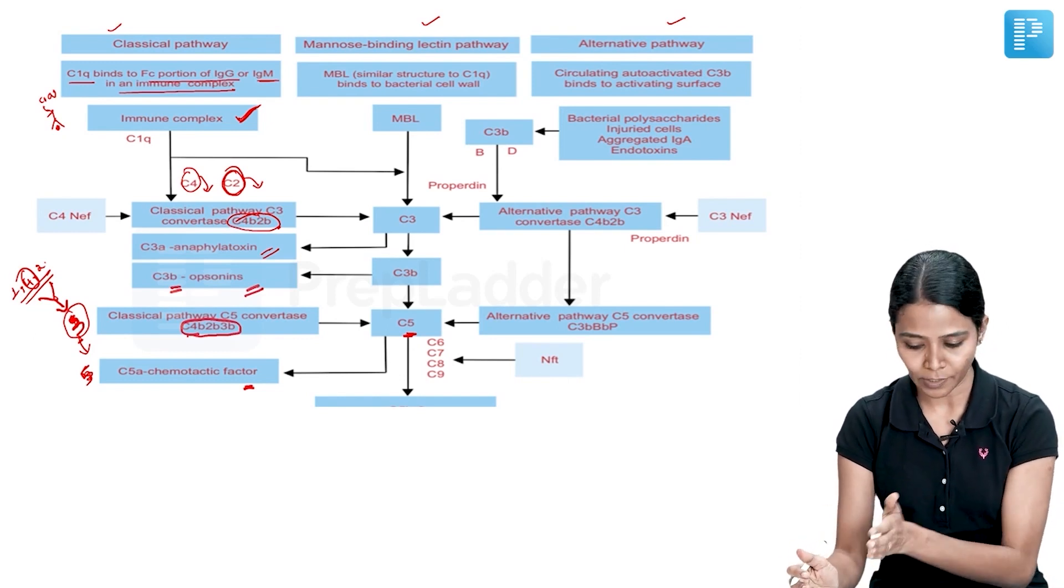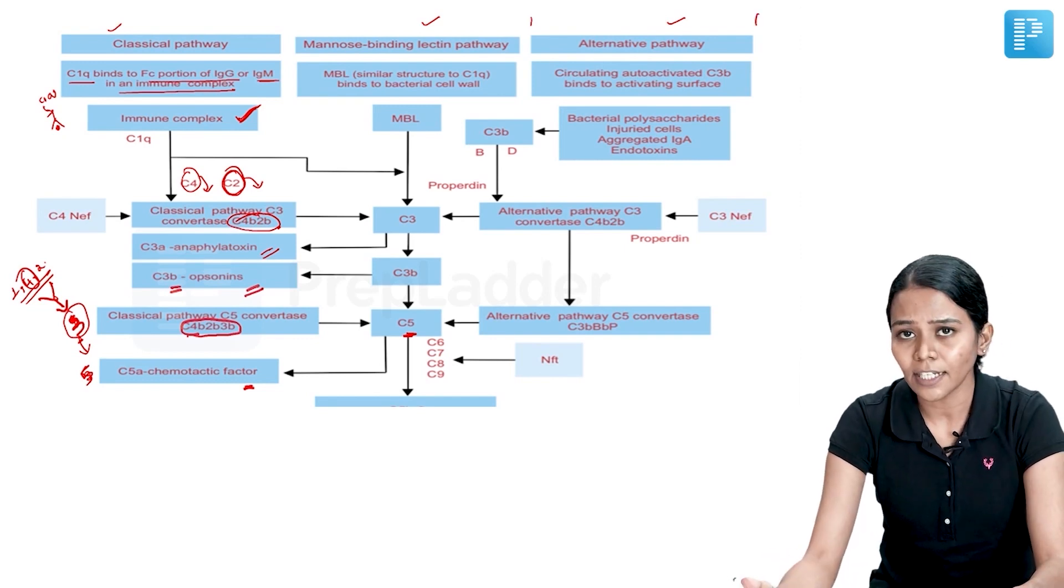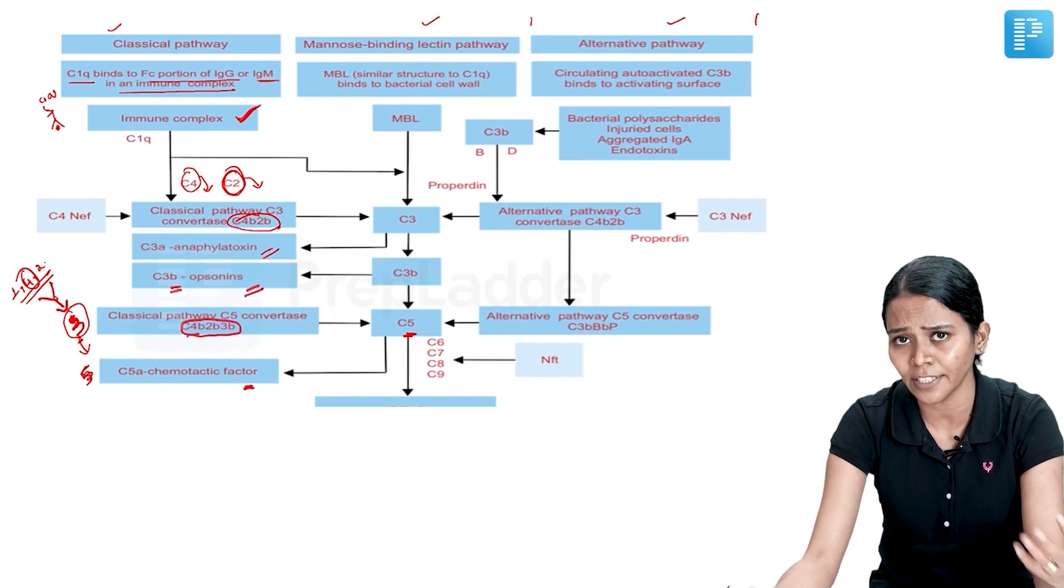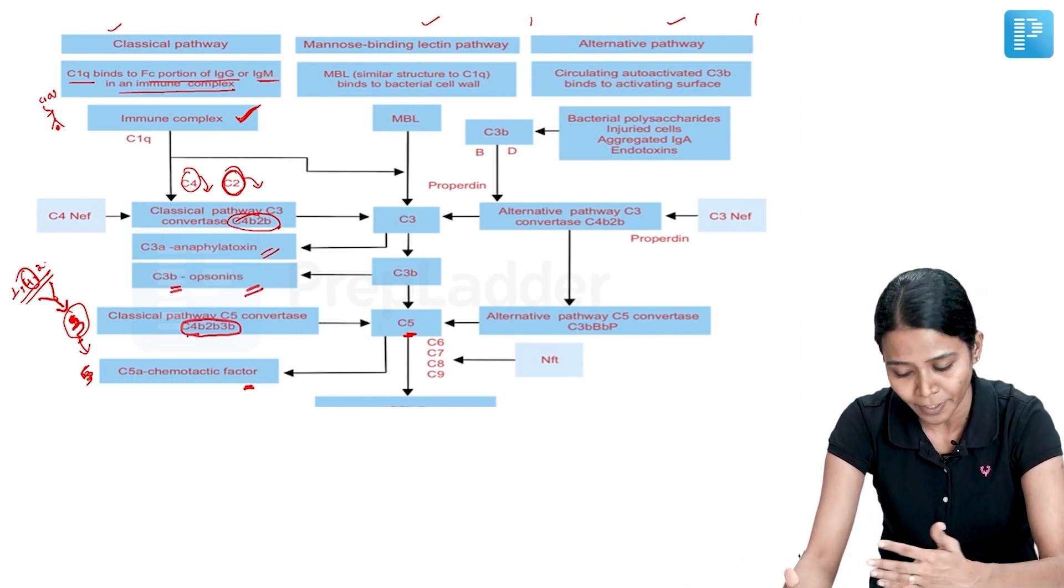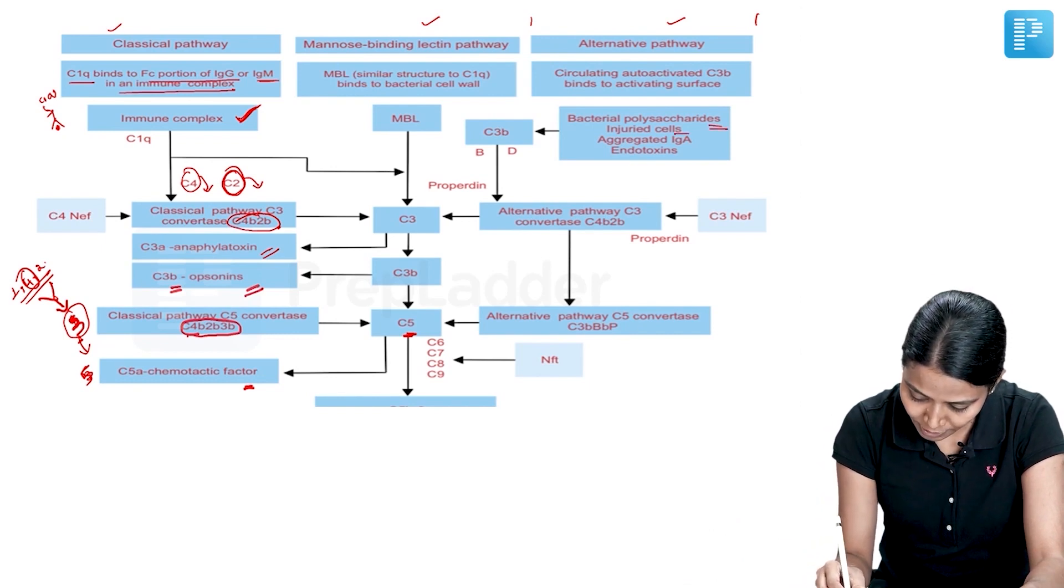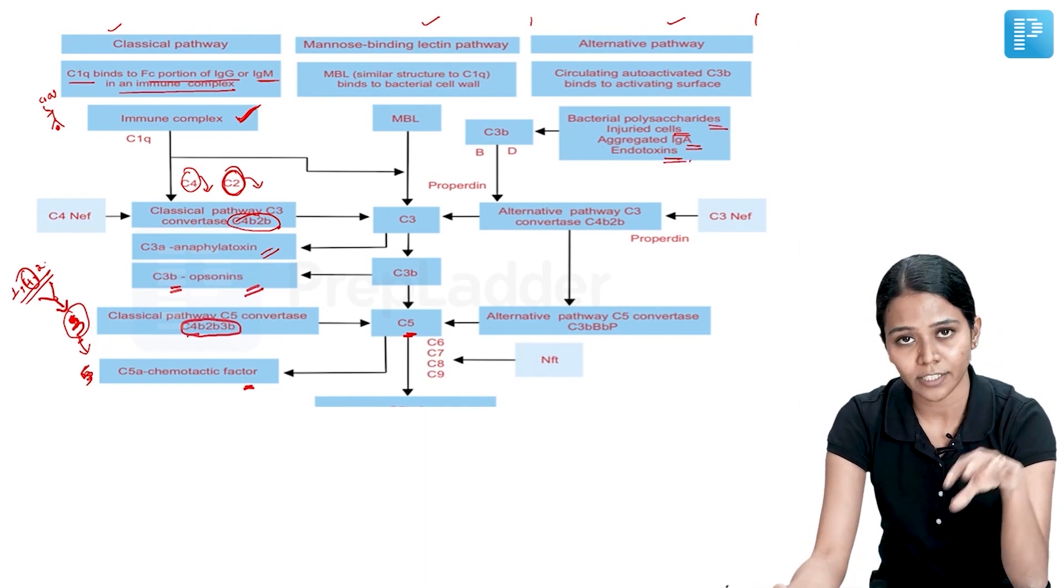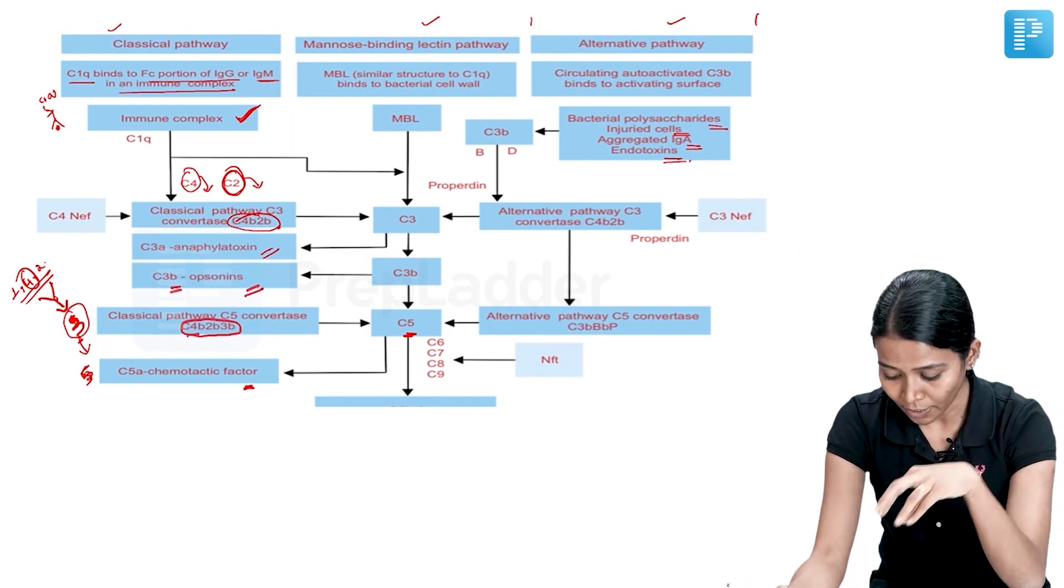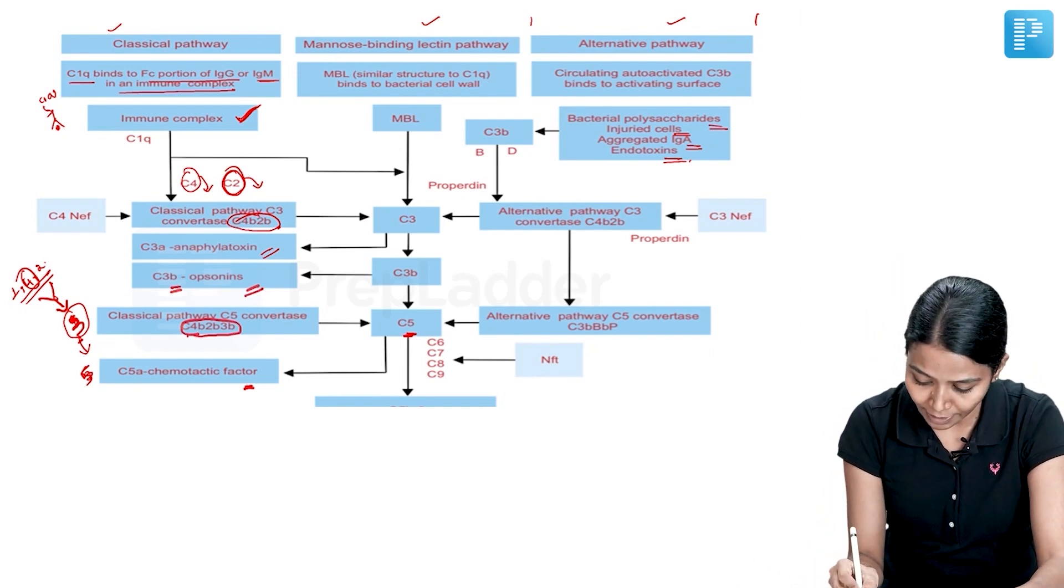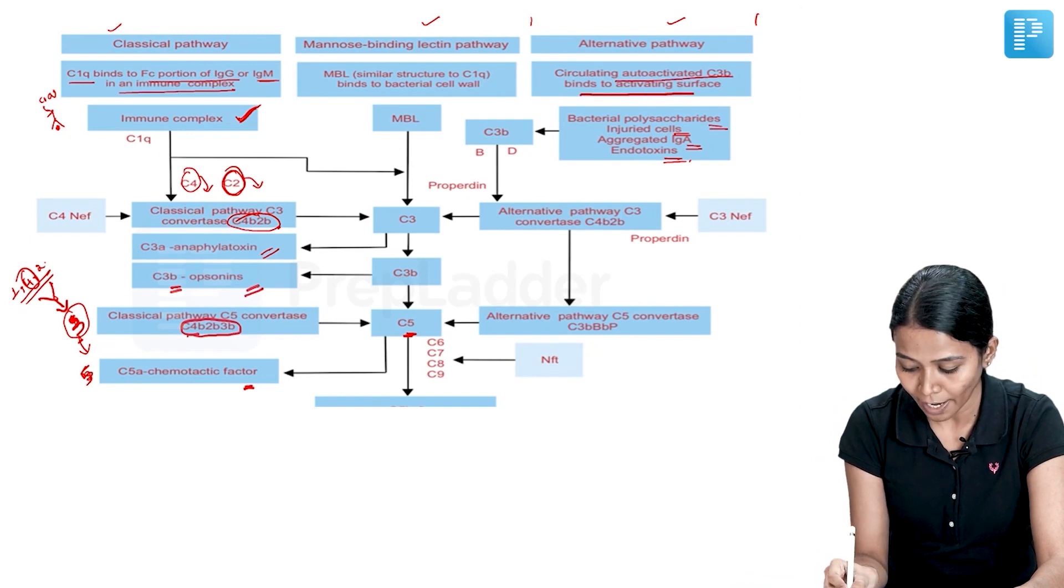Now coming to the alternative pathway, I want you to concentrate on this last section, alternative pathway. Here, alternative pathway can get activated by 2 mechanisms. One is it can get activated by itself, that is called tick-over mechanism, that is there is some spontaneous activation. Now this is kept under check by few things which I will be coming to. Apart from this, there can be bacterial polysaccharides, injured cells, aggregated IgA and endotoxin which can stimulate.